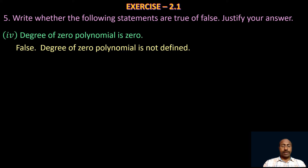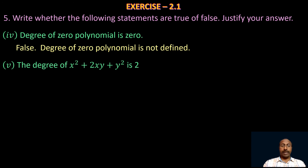Take the next one: the degree of x² + 2xy + y² is 2. Yes, it is a true statement. In the given polynomial we have three terms: the degree of the first term is 2, the degree of the second term is 1+1=2, and the degree of the third term is also 2. So the highest degree is 2.